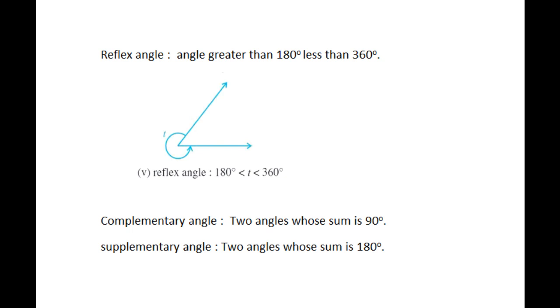Next, complementary angle: two angles whose sum is 90 degrees are called complementary angles. The supplementary angle: two angles whose sum is 180 degrees is called the supplementary angle.